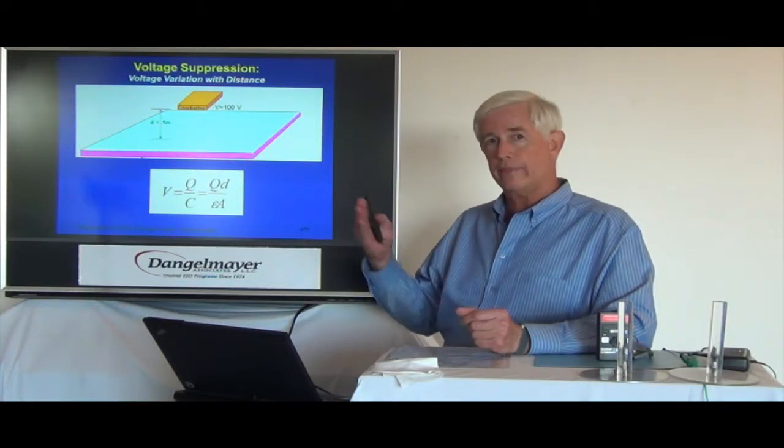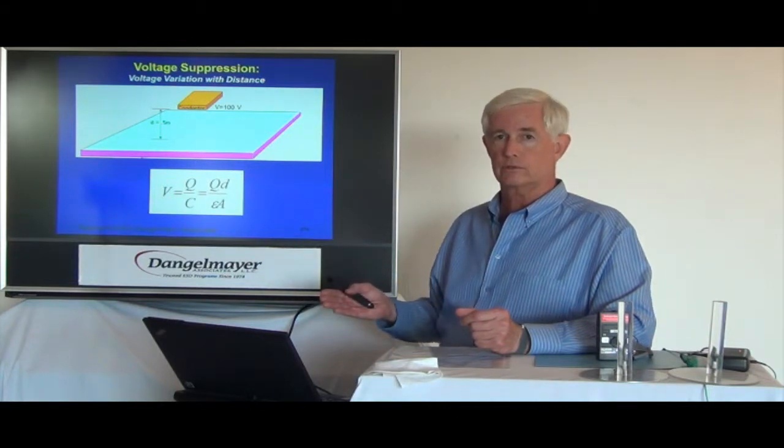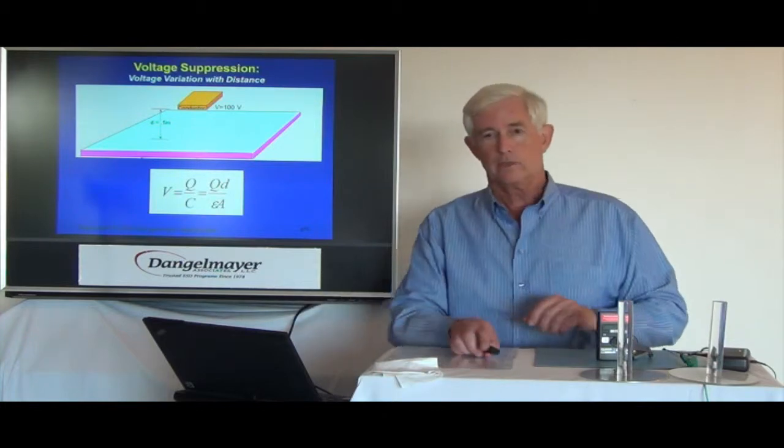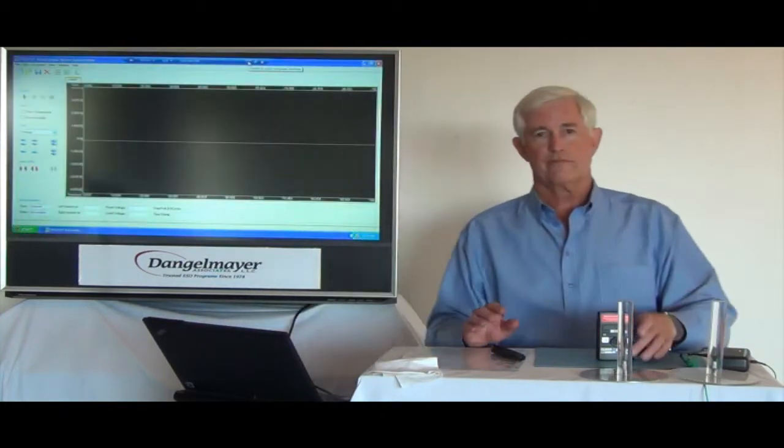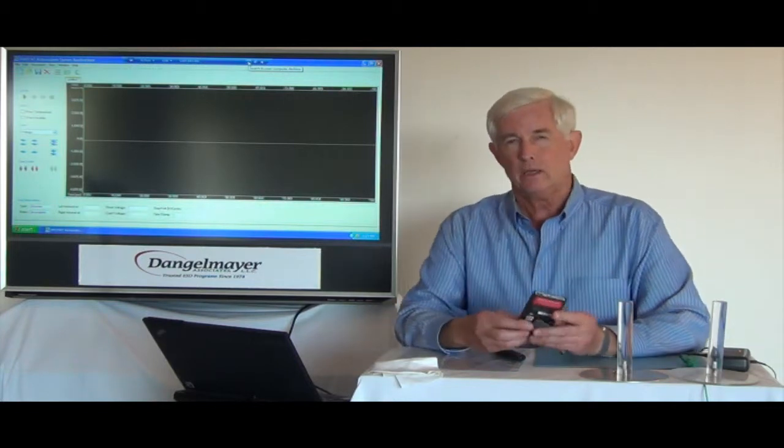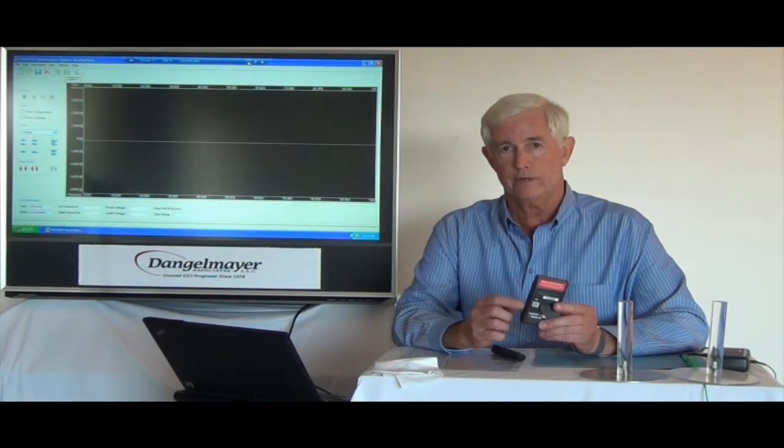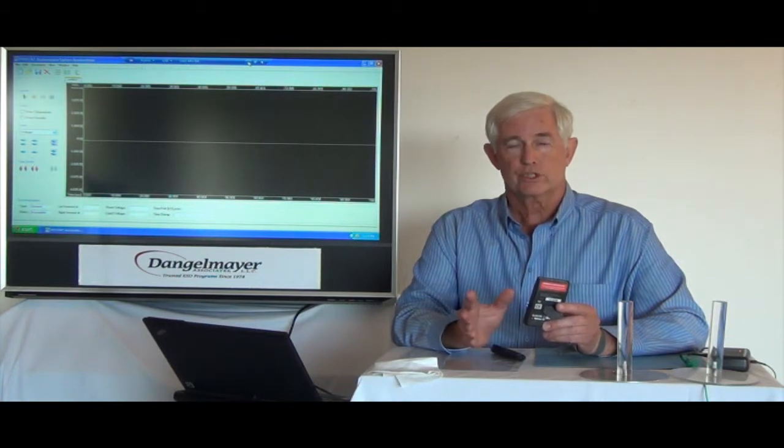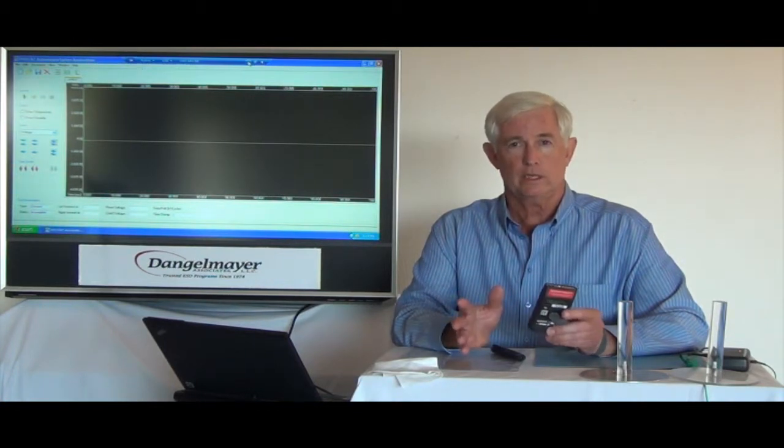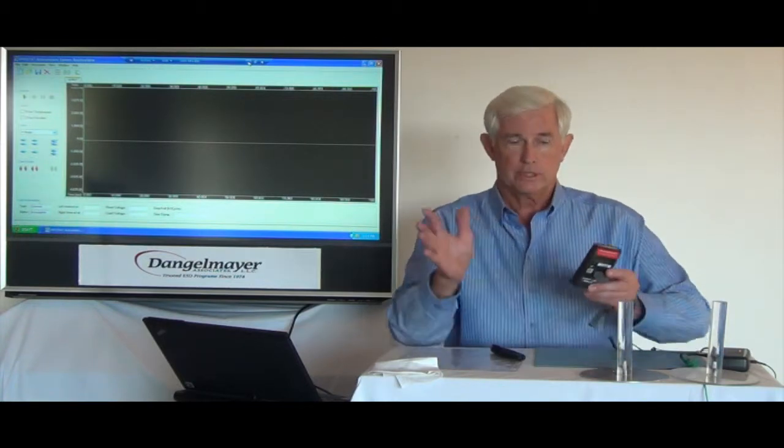In other words, the voltage on that metal disk or plate varied only because of the distance. Now to illustrate that we're going to use this field meter and also explain that one of the pitfalls of using a field meter, any field meter, is voltage suppression. It's one of the more significant pitfalls. Voltage suppression can give you erroneous readings or readings that are misleading without knowing it, and we're going to demonstrate that for you.